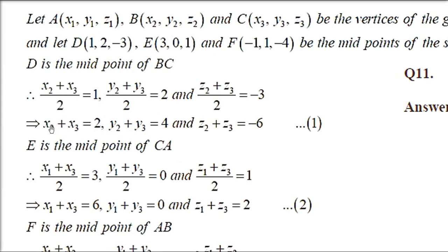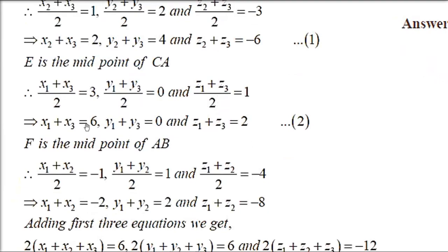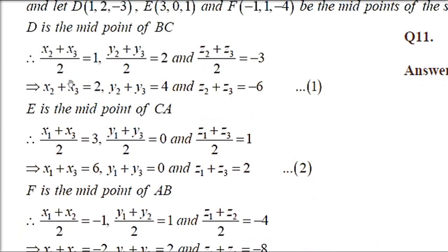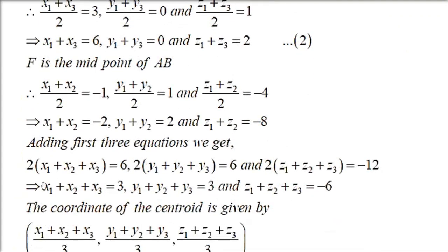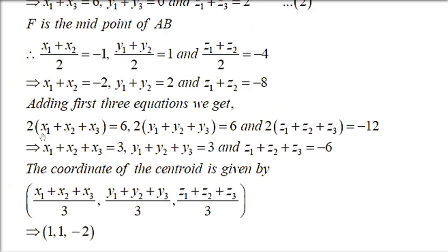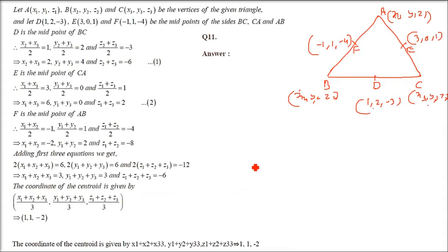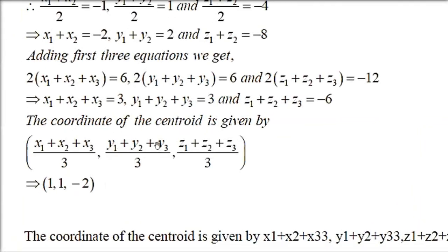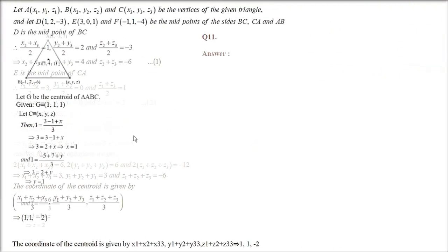Same thing as done in the earlier question. There will be 3 corresponding equations — 9 equations in all. Add all x-equations, all y-equations, all z-equations. You will get twice of each sum. So x1 + x2 + x3 = 3, y1 + y2 + y3 = 3, and z1 + z2 + z3 = -6. The centroid is (x1+x2+x3)/3 = 1, (y1+y2+y3)/3 = 1, (z1+z2+z3)/3 = -2. So the final answer is (1, 1, -2).